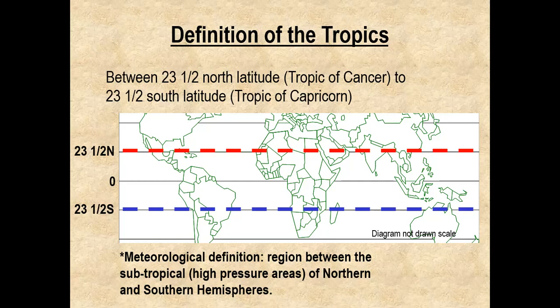For a meteorological definition, we refer to the tropics as a region between the subtropical high-pressure areas of the northern and southern hemisphere. Typically, the subtropical highs are going to be positioned around 30 degrees latitude in both the northern and southern hemispheres out over the ocean. That's the meteorological definition.